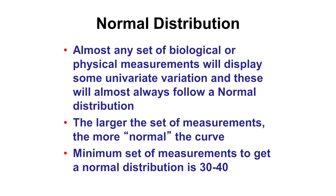The larger the sample set, the more normal the curve looks—more symmetric and smoother. To get something that looks like a normal distribution, you need a sample size of about 30 to 40—not 50, not 100, not 10. This is actually one of the reasons why class sizes in schools are about 30 students, related to early IQ testing, which required a normal distribution.